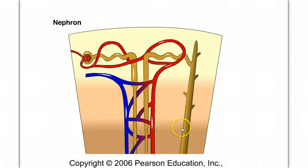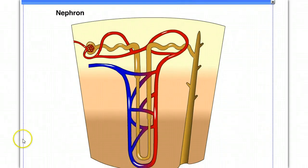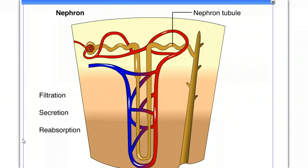Nephrons regulate the composition of blood by a combination of three processes that transfer materials between the nephron tubules and the capillaries that serve them: filtration, secretion, and reabsorption. A nephron tubule and the blood vessels surrounding it have been straightened and simplified in this diagram. The gradation of color, lighter on top, darker on the bottom, corresponds to an increasing concentration of solutes in the interstitial fluid surrounding the nephron toward the center of the kidney.